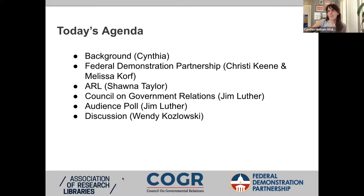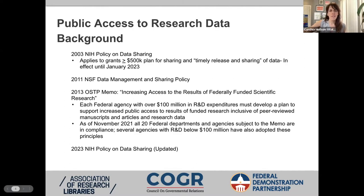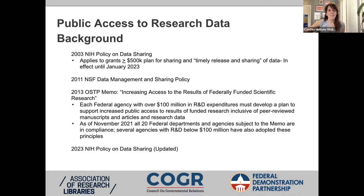Public access to research data has existed in some form for quite a while. This isn't an exhaustive timeline, but highlights key dates with broad impact throughout higher education. A critical point was in 2003 when NIH released their data sharing policy for grants greater than $500,000. This was followed in 2011 by NSF releasing a directorate-wide policy for sharing research data for all awards. In 2013, the Holdren memo directed all federal agencies with over $100 million in R&D expenditures to develop plans to support increased public access to results of funded research, inclusive of peer-reviewed manuscripts and research data.